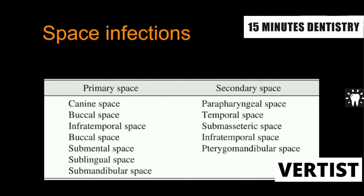If the canine is involved, the canine space will be involved; with the molar, the buccal space will be involved. In more severe cases, secondary spaces can also be involved, such as the parapharyngeal space, temporal space, submasseteric space, infratemporal space, and pterygomandibular space. The space involved depends upon which tooth is involved.